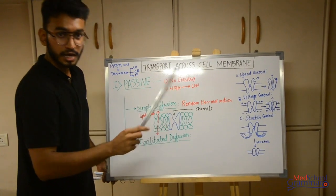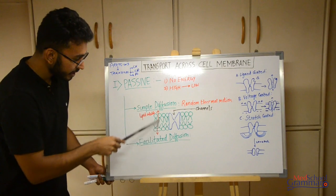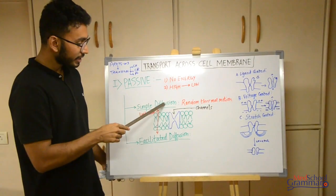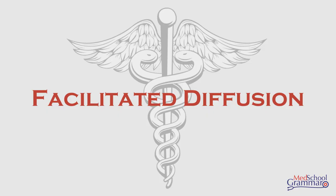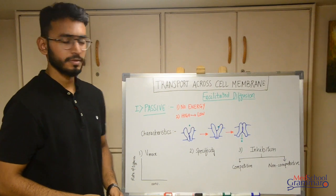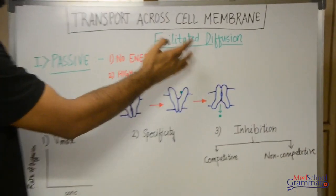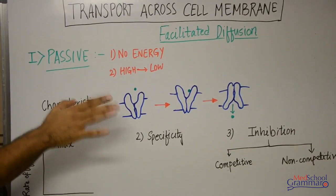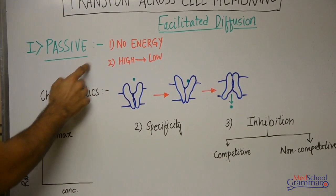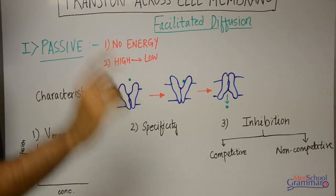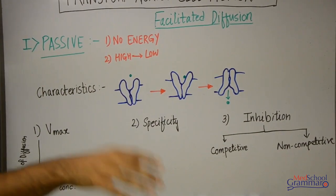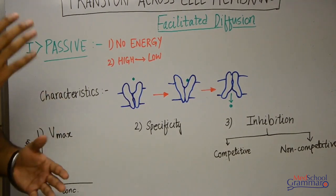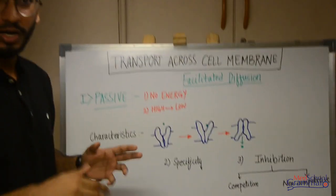Those are the three types of channels used in simple diffusion to allow passage of lipid-insoluble substances. Lipid-soluble substances pass directly through the lipid bilayer. That completes simple diffusion. Moving on to facilitated diffusion — it is a type of passive diffusion, characterized by no energy requirement and movement of molecules from an area of higher concentration to an area of lower concentration. Facilitated itself means it is helped or assisted.